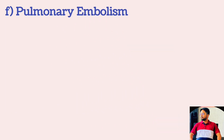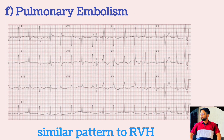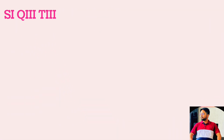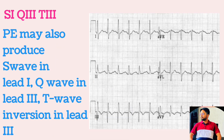Pulmonary embolism: Acute right heart strain secondary to massive pulmonary embolism produces a similar pattern to right ventricular hypertrophy. T-wave inversion in the right precordial leads V1 to V3 and the inferior leads 2, 3, AVF are seen. In pulmonary embolism, T-wave inversion may also occur in lead 3 as part of the S1Q3T3 pattern — S-wave in lead 1, Q-waves in lead 3, and T-wave inversion in lead 3.